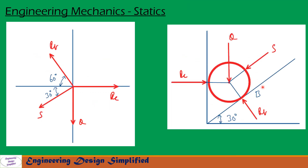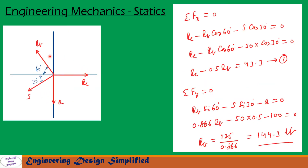For the second roller, let us draw the forces and reactions on the XY plane. Weight Q is acting downwards, reaction RC is acting horizontally, RB is acting at this direction — since this angle is 30 degrees, this is 60 degrees — and S is acting at 30 degrees as shown. Since there are more than three forces, we cannot use Lamy's theorem, so we will use the method of projections for this second roller.